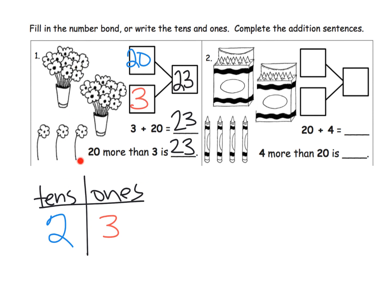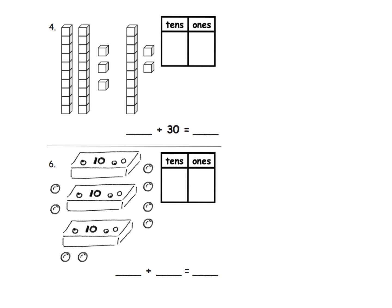Now I chose these examples because we're removing some scaffolding. Here we're dealing with cubes rather than real objects. We can see that we have three tens and — let's see — one, two, three, four, five — five ones. So we have three tens and five ones. What are we missing down here? We know the total is 35, so I'm going to put the total right there. The missing number is five.